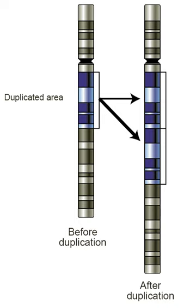Replication slippage is an error in DNA replication that can produce duplications of short genetic sequences. During replication, DNA polymerase begins to copy the DNA. At some point during the replication process, the polymerase dissociates from the DNA and replication stalls. When the polymerase reattaches to the DNA strand, it aligns the replicating strand to an incorrect position and incidentally copies the same section more than once. Replication slippage is also often facilitated by repetitive sequences, but requires only a few bases of similarity.